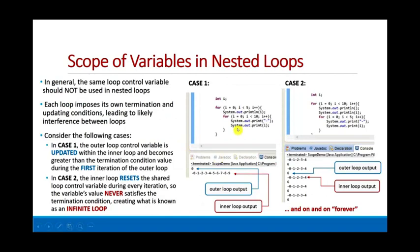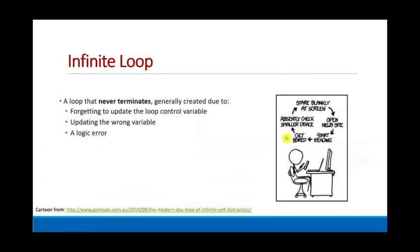This is yet another argument for why you shouldn't be using i, j, k. This guy's actually used the same exact variable for the outer and the inner loop. That ain't going to work very well. Don't be doing that. You won't have these problems if you use intelligently named loop variables. And of course, if you do it wrong, the loop may never terminate.